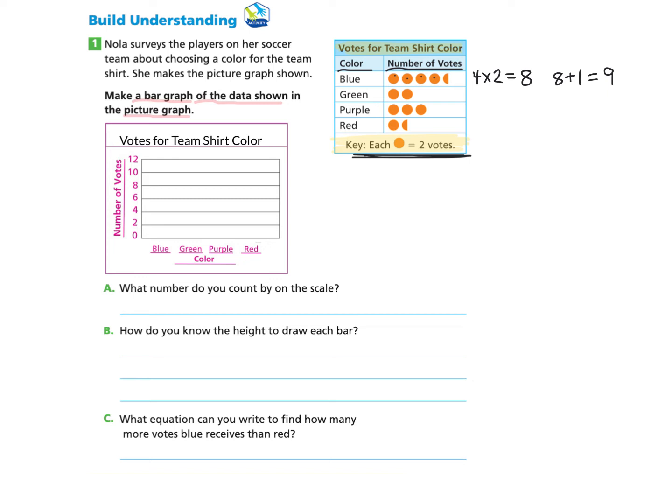Then we take a look at green. Green has two symbols. And we know that each symbol is worth two votes. So two times two makes four. So green has four.